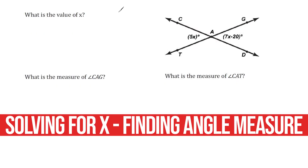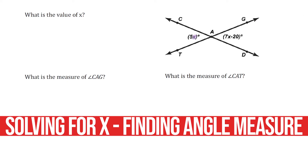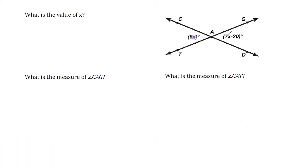The first thing we have to do is find the value of x. If you take a look, we should see x — in this expression it says 5x, and in this expression it says 7x minus 20.